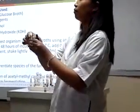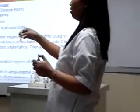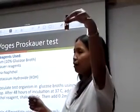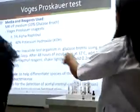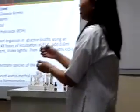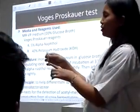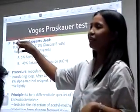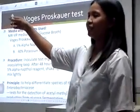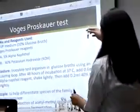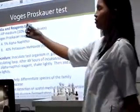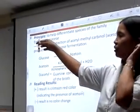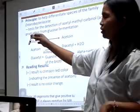For the Voges-Proskauer test, that is still the 10% glucose broth. You add 0.6 ml of your 5% alpha-naphthyl reagent. The reagent was already prepared because it will take 30 minutes to react. So you add your alpha-naphthyl and then swirl lightly. Afterwards, you add your KOH. That gives your positive result — you will have a crimson red color.